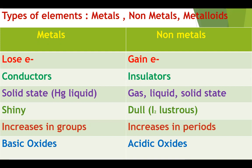Here is a comparison between the properties of metals and nonmetals. Metals are those elements which have a tendency to lose electrons. Metals are good conductors of heat and electricity — they allow the passage of electricity through them due to the presence of free electrons. Metals exist usually in the solid state, except mercury, which exists in liquid form. Metals have a shiny appearance.